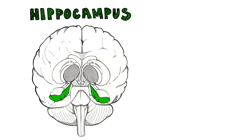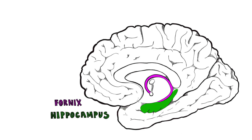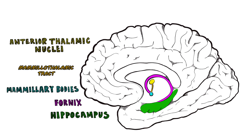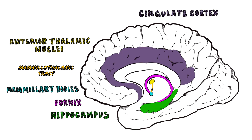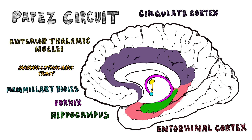The hippocampus consolidates short-term memory to long-term. The fornix is its major output tract, so keep that memory firm. The fornix leads to the mammillary bodies, then the mammillothalamic tract, so info arrives at the anterior thalamic nuclei intact. Then to the cingulate cortex, entorhinal cortex, and then hippocampus. This is the Papez circuit — emotion and memory it helps grant us.